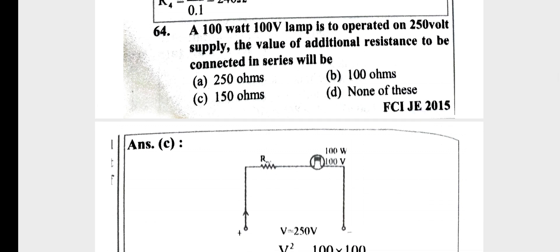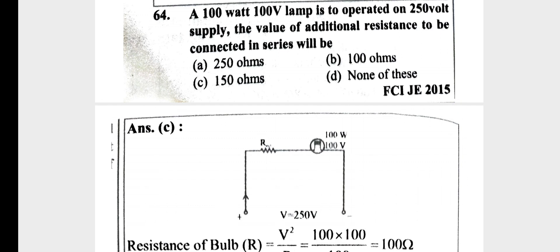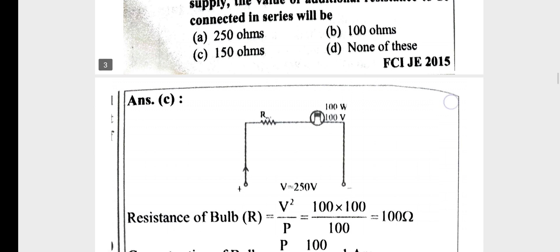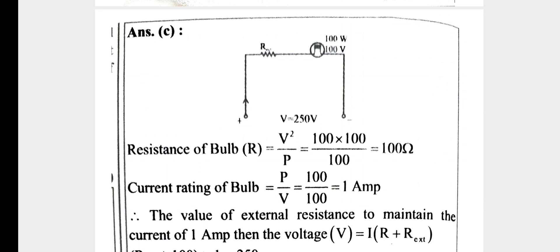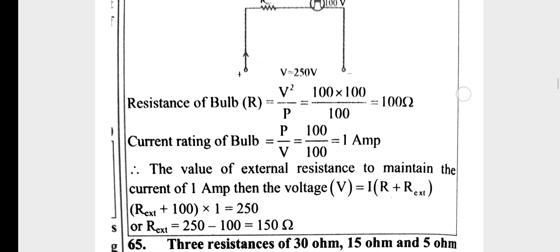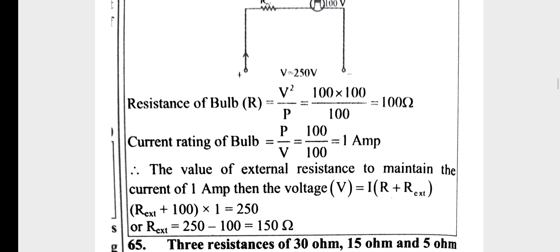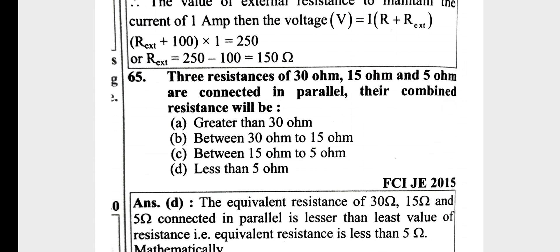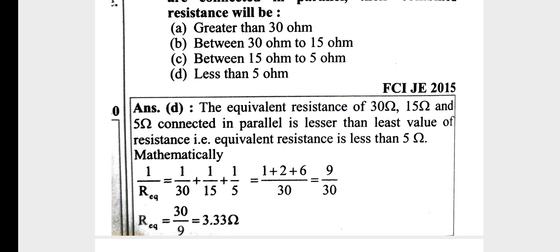Question 4: A 100 watt, 100 volt lamp is to be operated on a 250 volt supply. The value of additional resistance to be connected in series — the bulb resistance is V² by P, which is 100 Ohm. Current rating is 1A. The voltage across external resistance maintains 1A, so external resistance needed is 150 Ohm. Combined resistance with 30 Ohm, 15 Ohm, and 5 Ohm gives an equivalent of 3.33 Ohm, which is less than 5 Ohm.